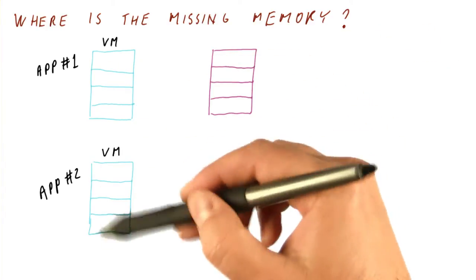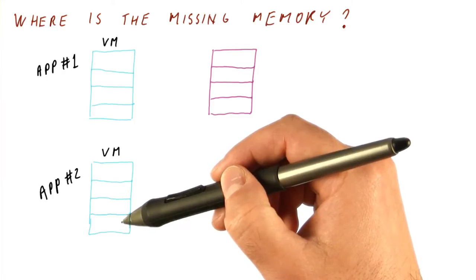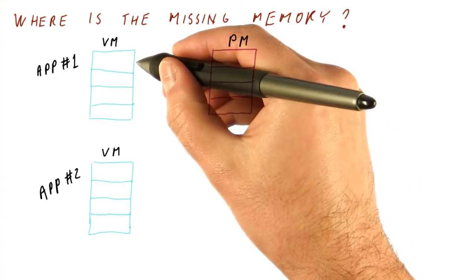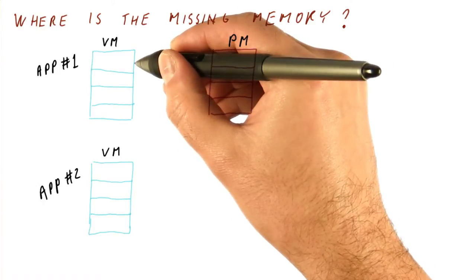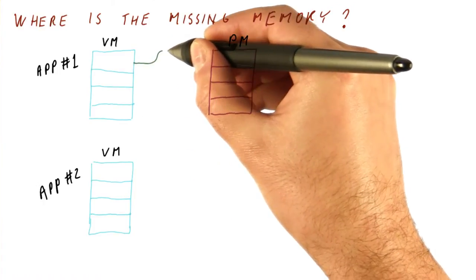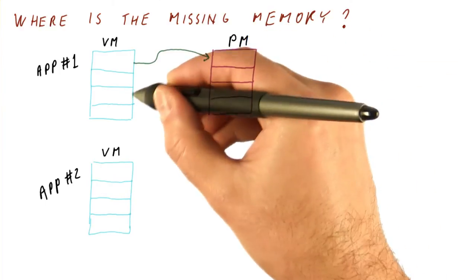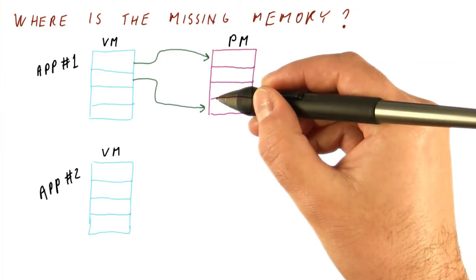Let's say that each of these applications is actually using all of its pages, because there are only four. In this application, there is a four entry page table that for every page tells us which frame contains it, and it could be any frame in memory.